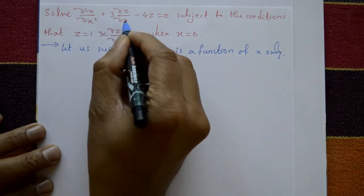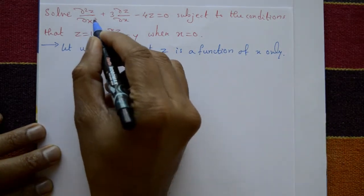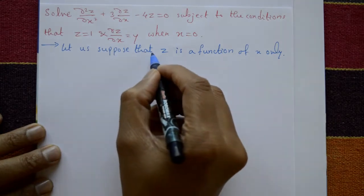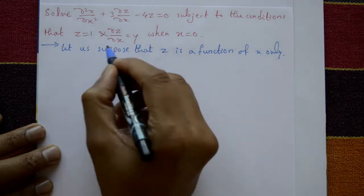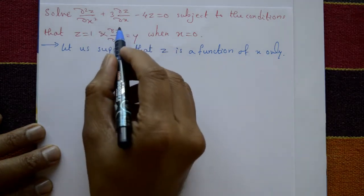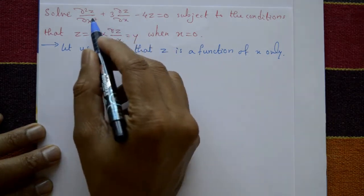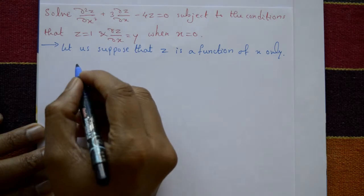There is only one independent variable — x is the independent variable. That means we assume z is a function of x only, i.e., one independent variable.